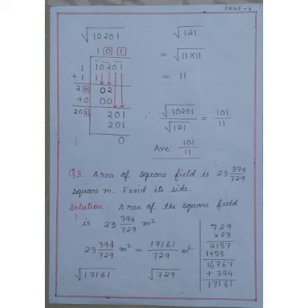Here, area is given 23, 394 by 729 meter square. If I convert it to improper fraction, I get 17161 divided by 729 meter square. Now, I have to find the square root of 17161 and 729 separately.